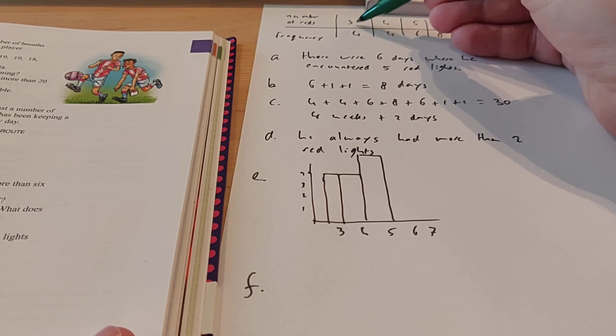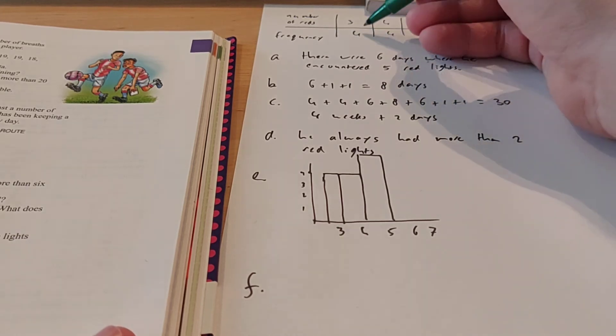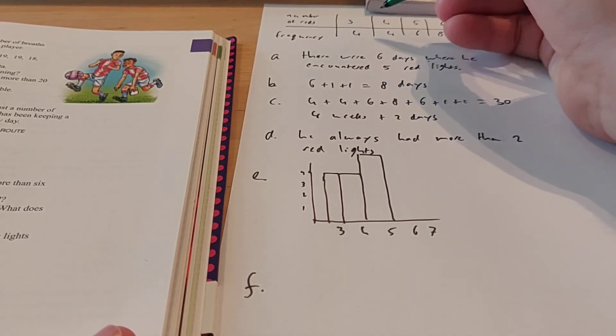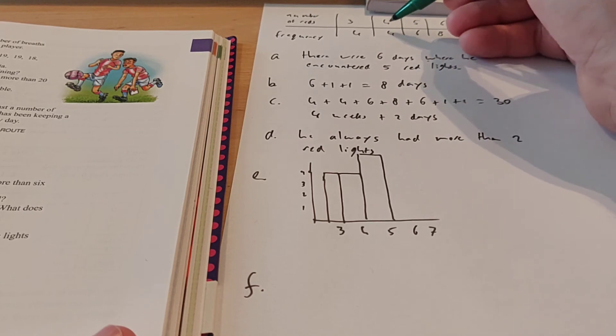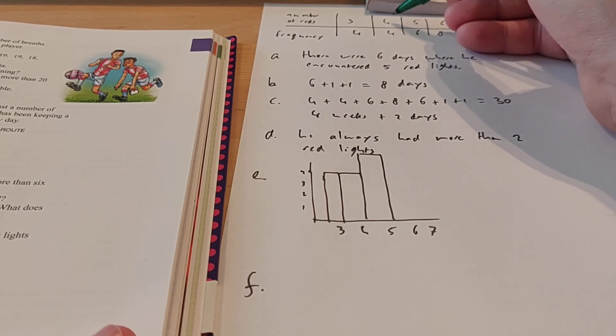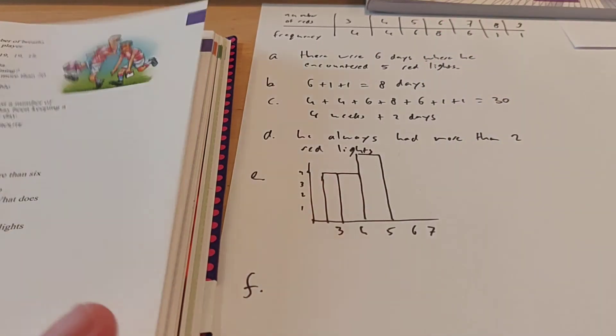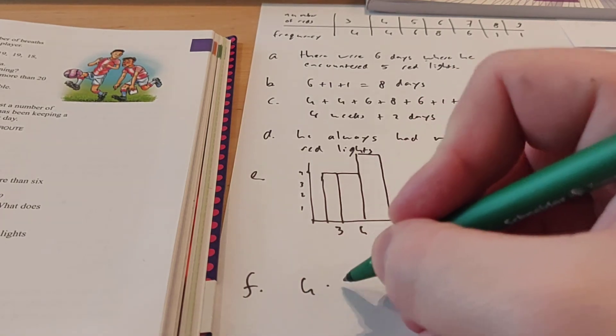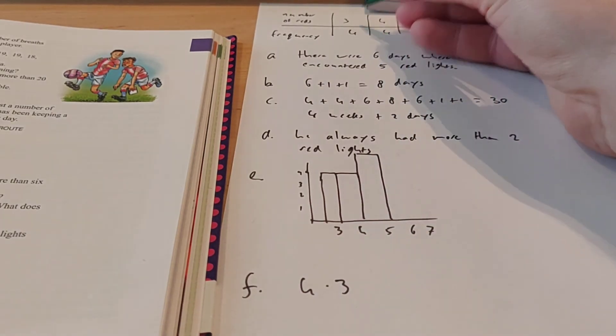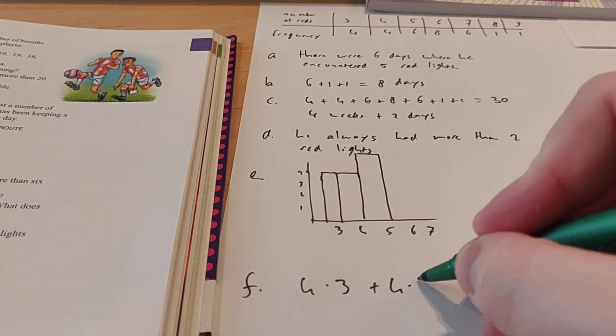There were 4 days where he had 3 red lights. So in total, on those 4 days, he encountered 12 red lights, right? And there were 4 days where he encountered 4 red lights every day. So in total, this is 16. So what you need to do is you have to do 4 times 3, this frequency times the number of reds.